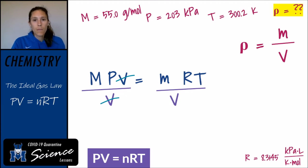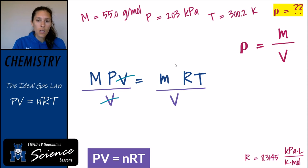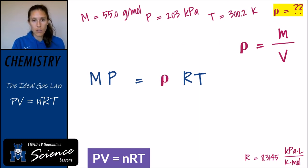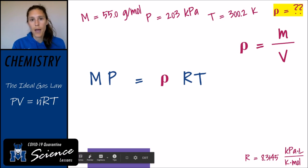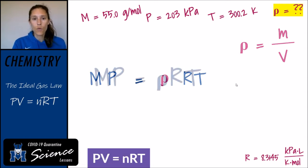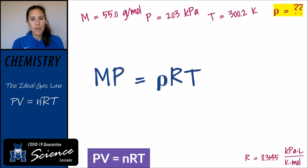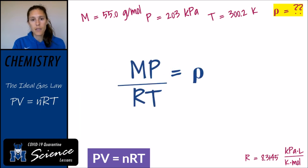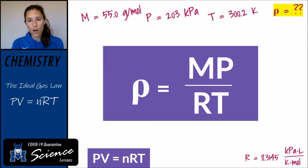Substituting in density, we get: molar mass times pressure equals density times R times T. I've selected R = 8.3145 because I was given a pressure in kilopascals. Rearranging to solve for density by dividing both sides by RT, I get: density equals molar mass times pressure over R times temperature in Kelvin. That's another equation you can have in your arsenal to solve these types of problems.